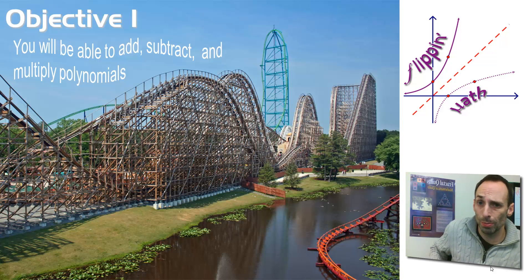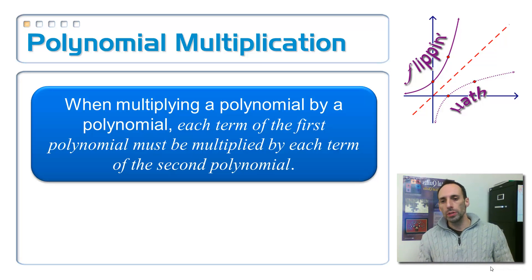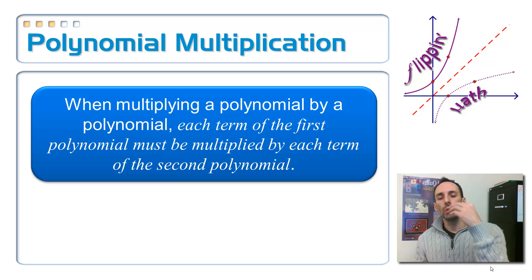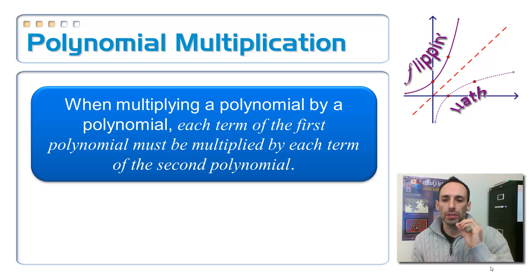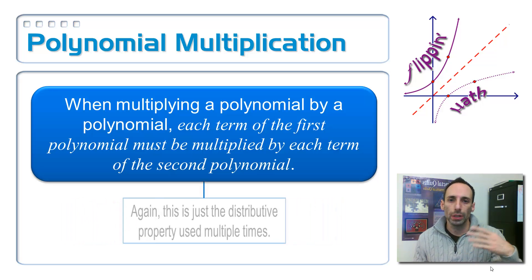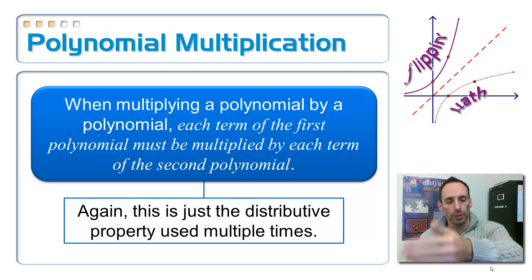We're going to do some more polynomial multiplication — a little more complicated ones. Whenever you are multiplying polynomials in general, you have to take each term of the first polynomial and multiply it times each term of the second polynomial. This is just the repeated application of the distributive property.